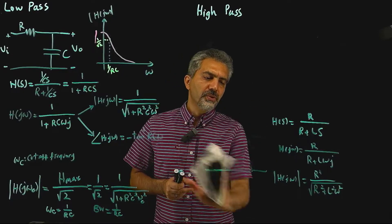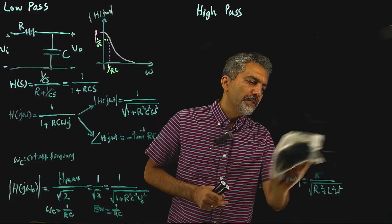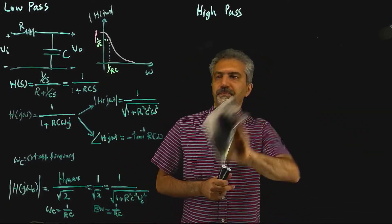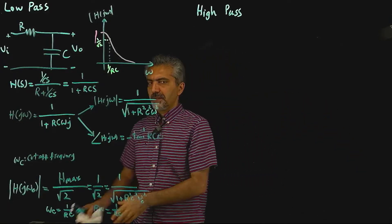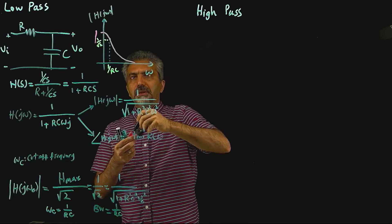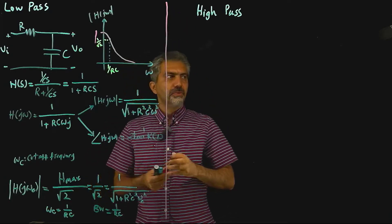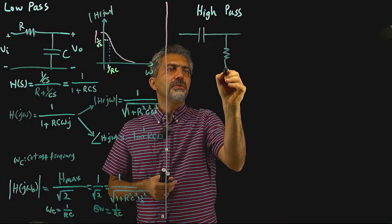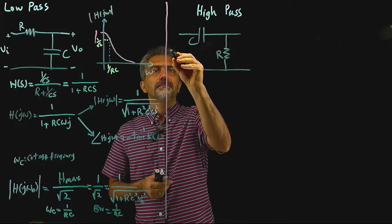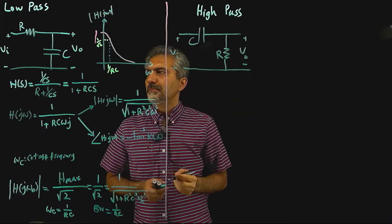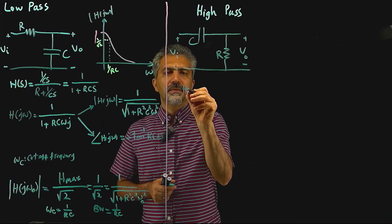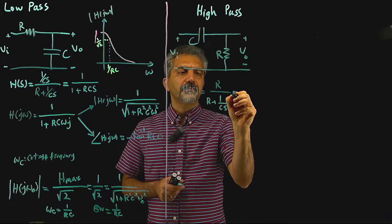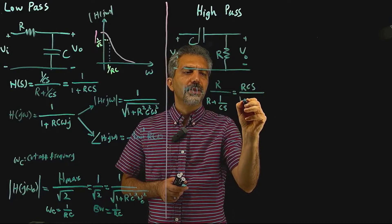I'm going to move forward to discuss high-pass filters, which, as you're going to see, are basically the dual of what we discussed so far. Using the concept of duality between capacitors and inductors, let's take the RC circuit and just switch where we place the capacitor and the resistor. When you do that and write H(s), using the voltage divider: R divided by R plus 1/(Cs), which simplifies to RCs divided by 1 plus RCs.